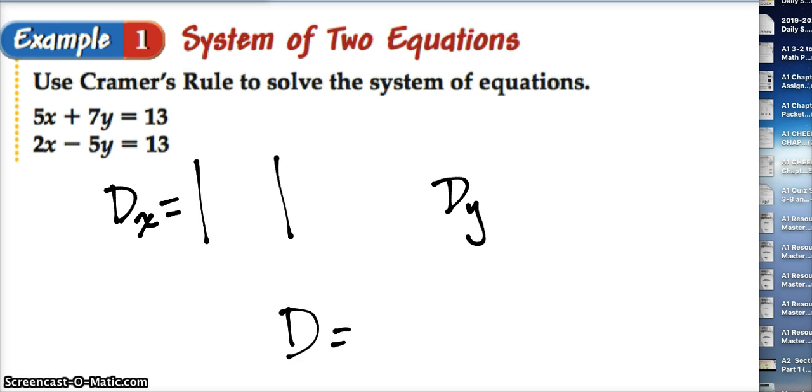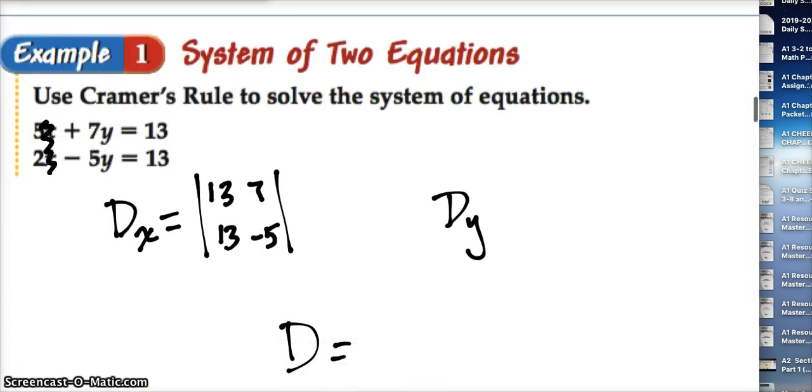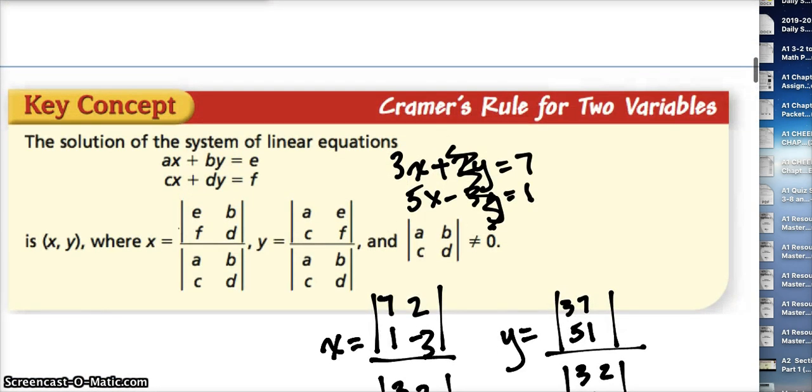There's going to be a determinant for x, a determinant for y, and then the random big determinant. What I remember is that if you take the x part off, you'll write down the answer values, then the coefficient of the y's. So EF and BD.